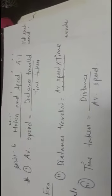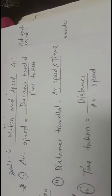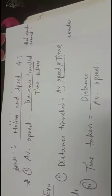Not all word problems will ask for average speed. Sometimes they will ask for the distance, and sometimes they will ask for the time taken. If the problem is asking for distance, we use the formula: distance traveled equals average speed times time. If the word problem is asking for time taken, we use: time equals distance divided by average speed.